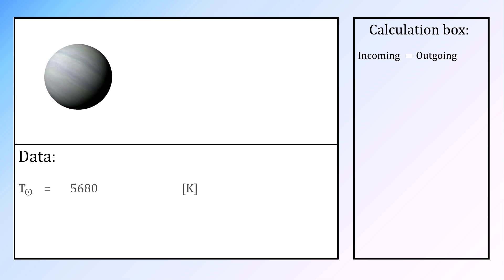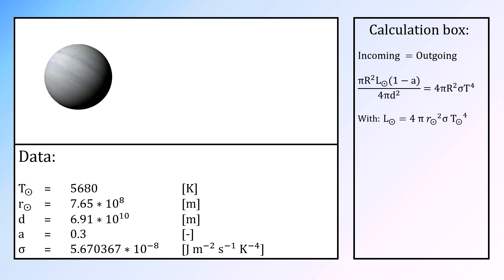Star-specific data, like temperature, size, and distance to the planet, are of course directly involved in this calculation, but also Bond albedo, the reflectiveness of a planet, and the Stefan-Boltzmann constant are necessary to make this estimation.